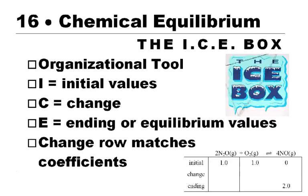A useful idea that shows up in Chapter 16 is this thing called the ICE Box. It really has nothing to do with a real icebox. The idea here is that it's just an organizational tool, and we use it in stoichiometry and also in equilibrium.